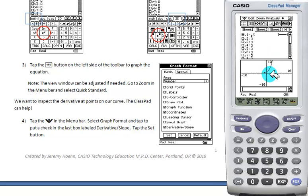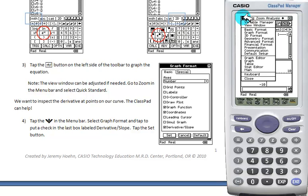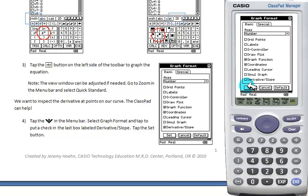We're going to be inspecting the derivative at points on the curve. So in order to do that, we're going to turn on our derivative slope. Tap here. Go to graph format. At the very bottom, we're going to select derivative slope. We're going to tap on that box to check it and set.